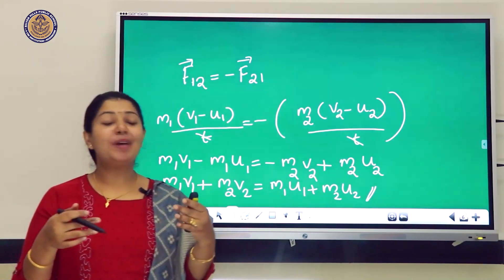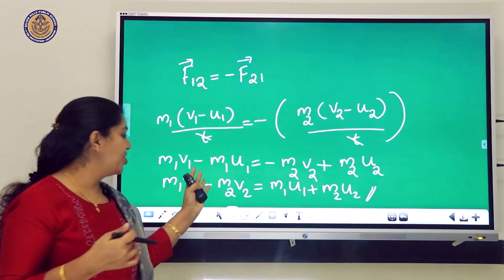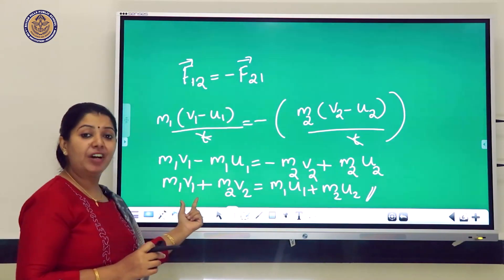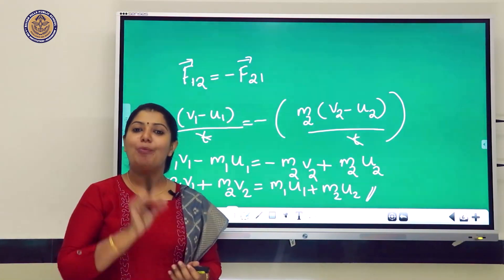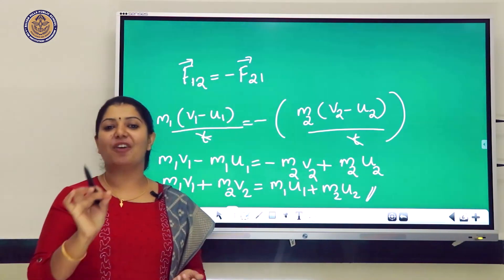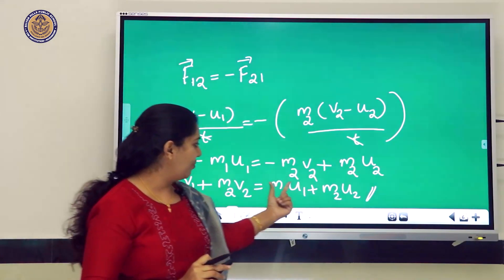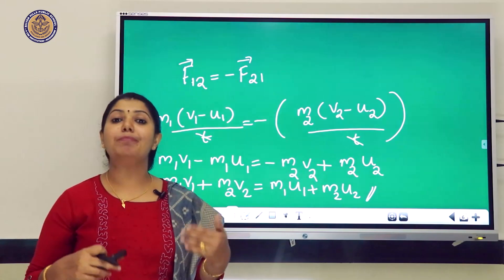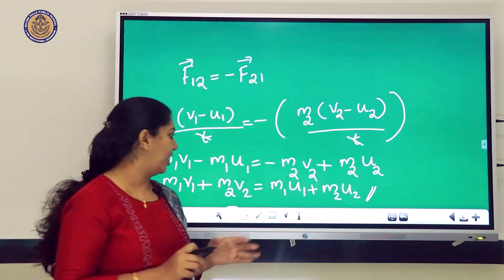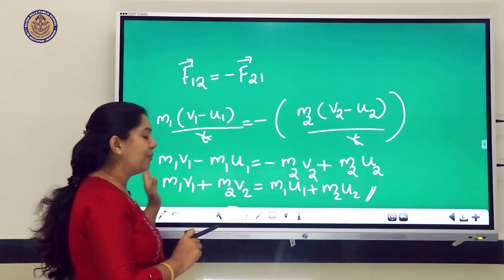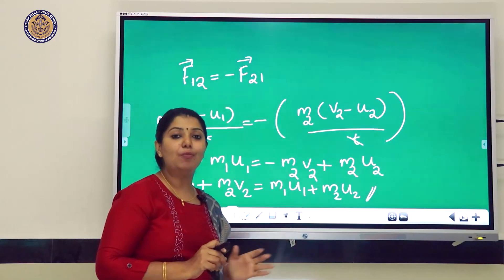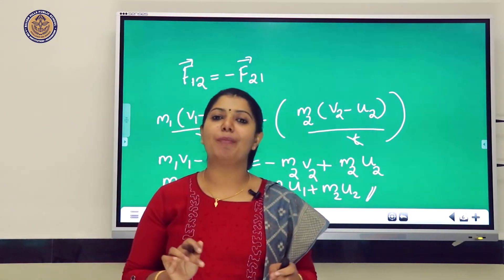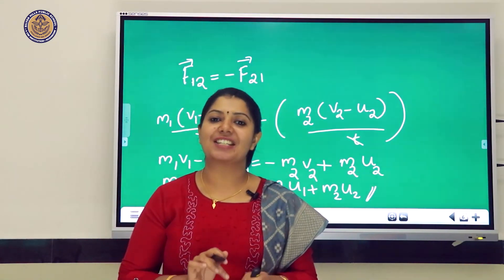We can say that momentum after collision equals momentum before collision: m₁v₁ + m₂v₂ is the momentum after collision, and m₁u₁ + m₂u₂ is the momentum before collision. Thus the total momentum remains constant.